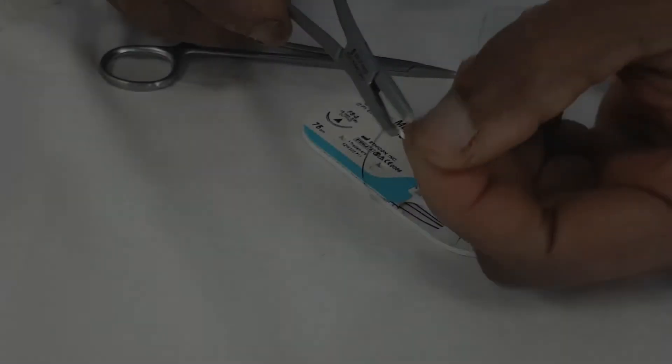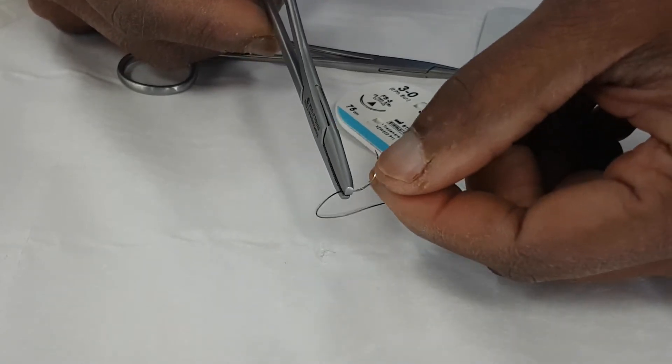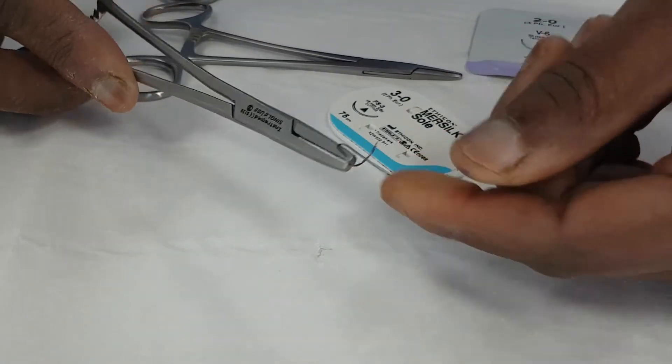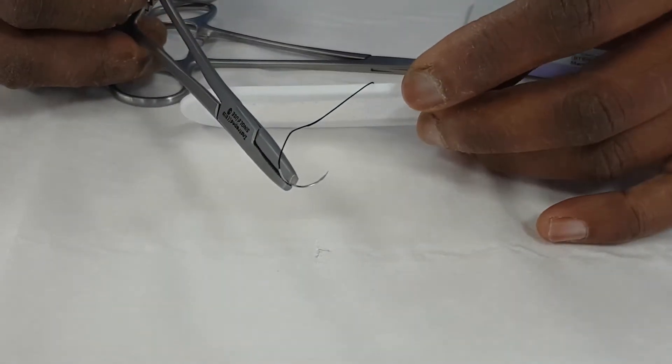And you might be able to just see that the point to actually put the needle holder is two-thirds the way down the stitch, one-third away from the end. So it's a two-third, one-third ratio.